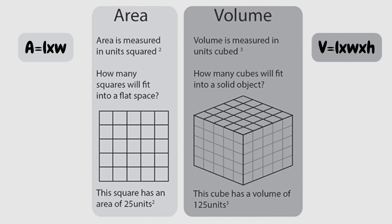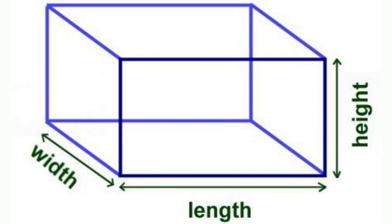Let's review some vocabulary. Area is measured in units squared, and the formula for area is length times width. Volume is measured in units cubed, and the formula for volume is length times width times height. Remember, length is how long something is, width is how wide or thick something is, and height is how high or tall something is.